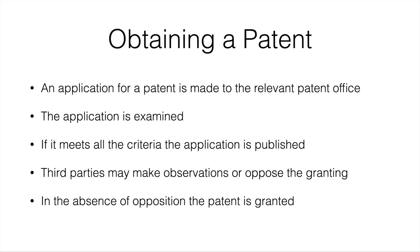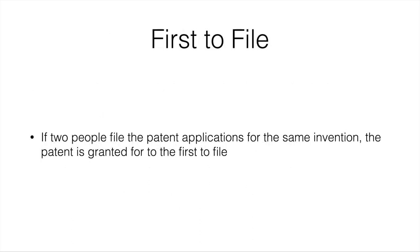An application for a patent is made to the relevant patent office — either a national office or the European Patent Office. The application is examined, and if it meets all the criteria, it is published. At that point, third parties can make observations or oppose the granting of the patent. In the absence of any opposition or problems, the patent will be granted. If two people file the same invention on different days, the first person to file will receive the patent. It's important that the invention is kept secret until the patent application is filed, at which point everyone gets to see it.